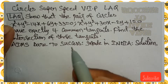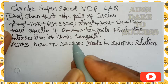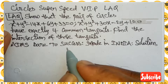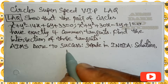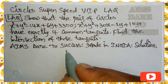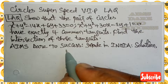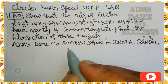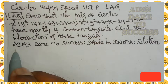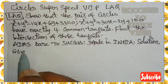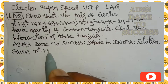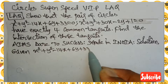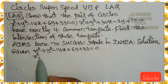Hi, hello, namaste, my dear friends and students. Welcome to our Aims Dare to Success channel. Today I came with circles — a super speed, very important previous VIP long answer question. The question is: show that the pair of circles x² + y² - 14x + 6y + 33 = 0 and x² + y² + 30x - 2y + 1 = 0 have exactly four common tangents, and find the intersection of those tangents.